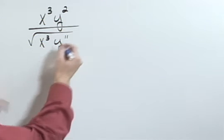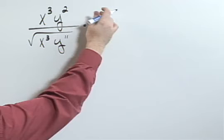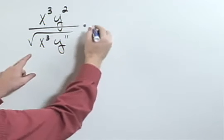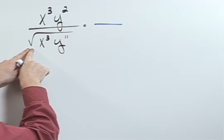What I need to do is figure out what I can multiply the numerator and denominator so that I can get rid of the square root.